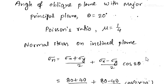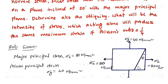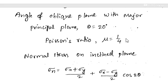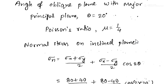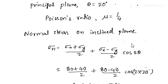The theta value is given as 20 degrees — the angle made by the oblique plane with the major principal stress direction of 80 N/mm². Poisson's ratio μ is given as 1/4. First, we find the normal stress on this inclined plane, given by the formula: σn = (σx + σy)/2 + (σx − σy)/2 · cos(2θ).